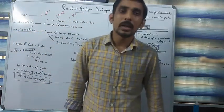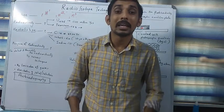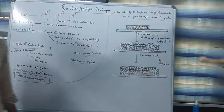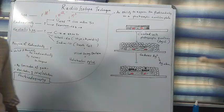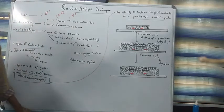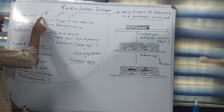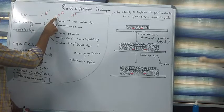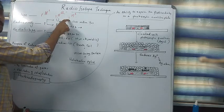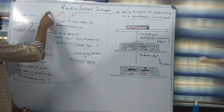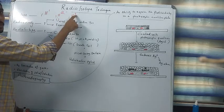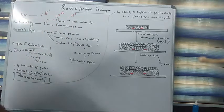An isotope consists of two or more atoms having the same atomic number, but their mass number will be different. Let us take an example. Hydrogen has three isotopes. One is called protium — it has atomic number one. The second one is called deuterium — their atomic number is also one. The third one is called tritium — their atomic number is also one. But their mass number will be different.